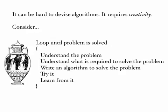Devising algorithms is actually hard. It requires creativity, and unfortunately we don't have a general algorithm for creativity. That means we don't have a general algorithm for devising algorithms. But here I've provided an outline of an informal set of steps you can use to help you devise algorithms. The idea is that you go round and round this loop until you've solved the problem — until you've got an algorithm that works.